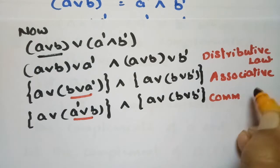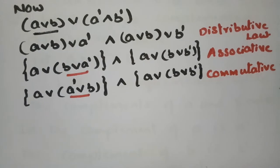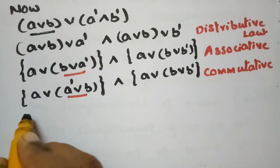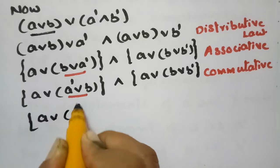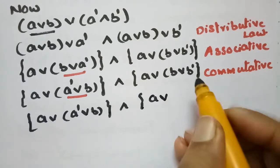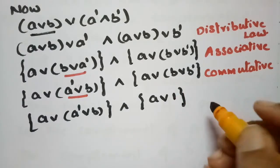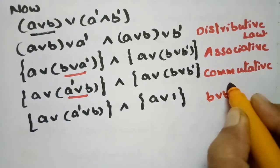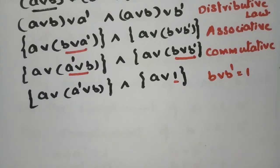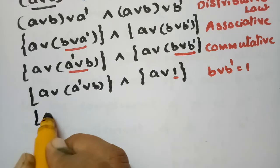Applying the commutative law, we arrive at (A∨A') ∧ (A∨B∨B'). Since B is a complement to B', B∨B' = 1 (the greatest element). So we substitute B∨B' = 1, giving (A∨A') ∧ (A∨1). Then applying associative law: (A∨A')∨B.